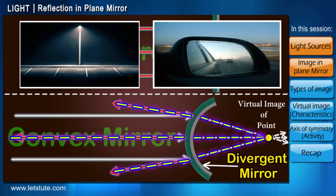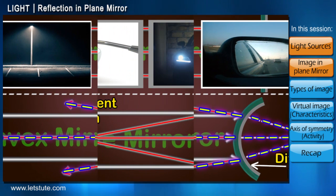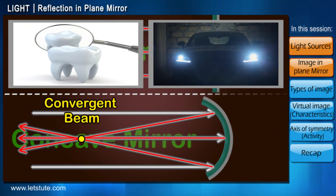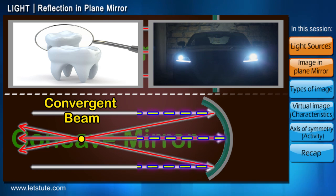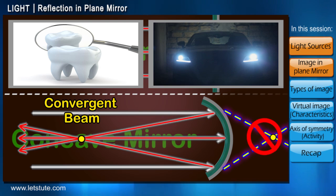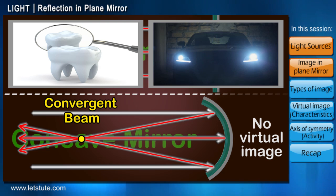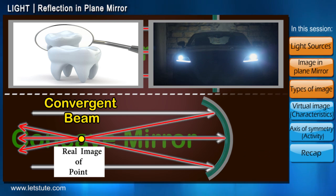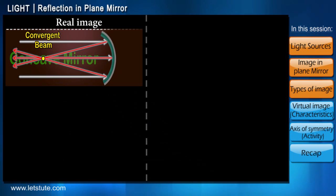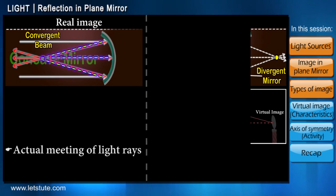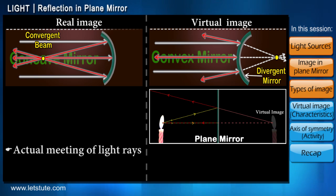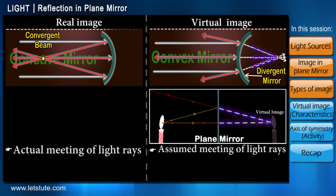In the case of concave mirrors, light rays get converged inwards to meet at a point without the need of drawing them backwards manually. Hence we don't find a virtual image in the case of concave mirrors, but something called a real image. Simply put, a real image is the actual meeting of light rays, while a virtual image is the non-real or assumed meeting of light rays.